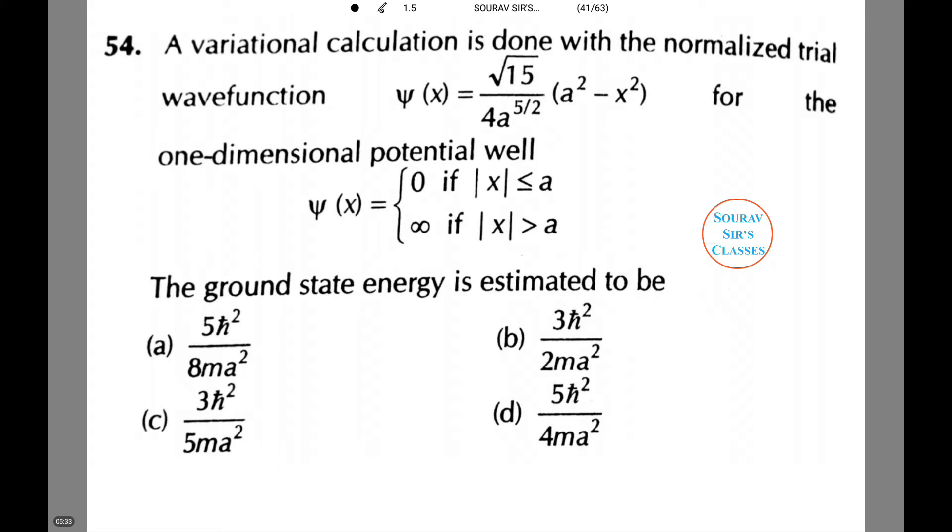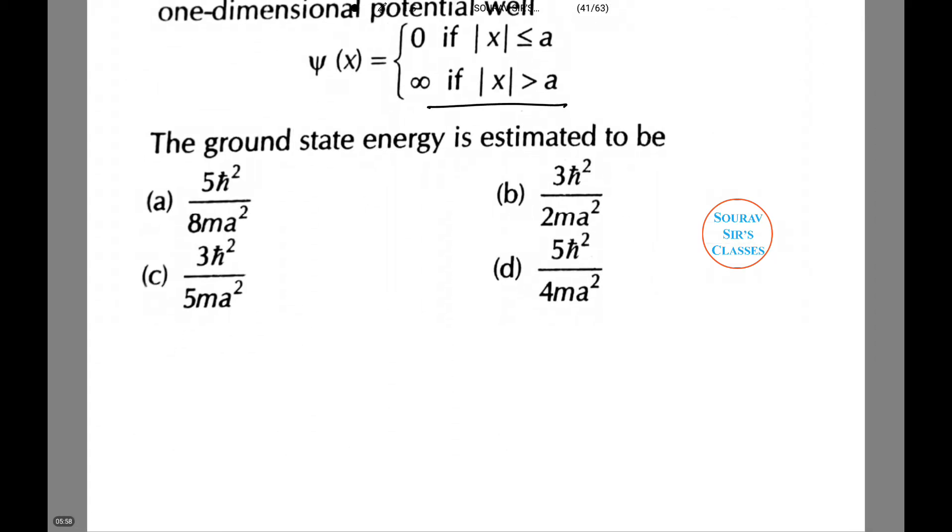Now in the next question, a variation calculation is done with the normalized trial wave function ψ(x) equals √(15/4a⁵/²)(a² - x²) for the one-dimensional potential well. We have ψ(x) equals 0 if |x| ≤ a and infinity if |x| > a. The ground state energy is estimated to be. Let's calculate that.